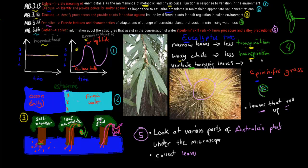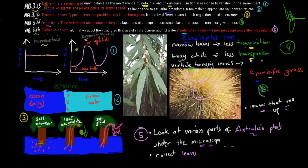The last dot point is 3.16, which says 'gather' — collect information about the structures that assist in conservation of water — and 'perform,' a skill verb, meaning you need to know the procedure and safety precautions for the experiment. You simply observed different types of Australian plants in the lab — under a microscope or with the naked eye — to find structures discussed in class that help with conserving water. This was a quick summary of the third context point of the Maintaining Balance module.